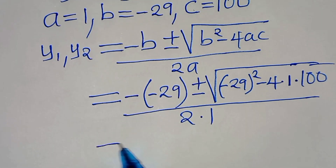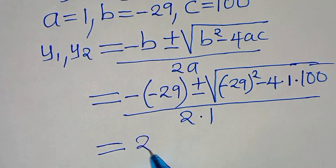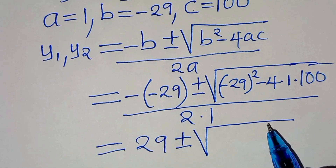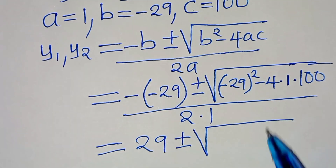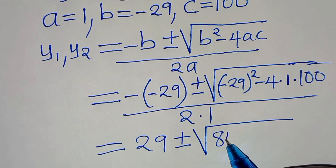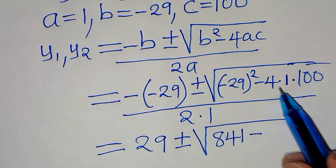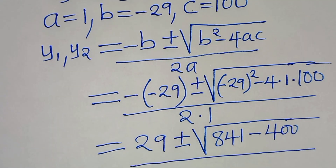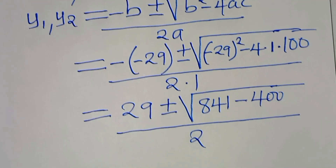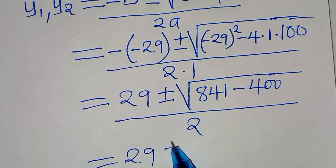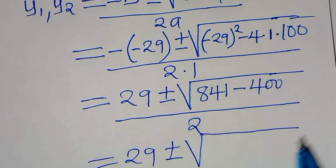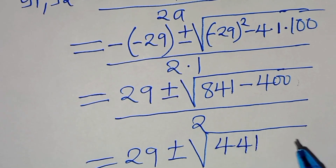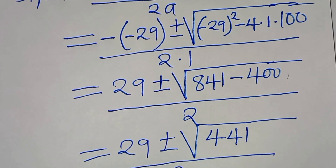This gives us 29 plus or minus the square root of (29 squared minus 4 times 100). Now 29 squared equals 841 and 4 times 100 equals 400, so we have 29 plus or minus the square root of (841 minus 400), which is the square root of 441, all divided by 2.